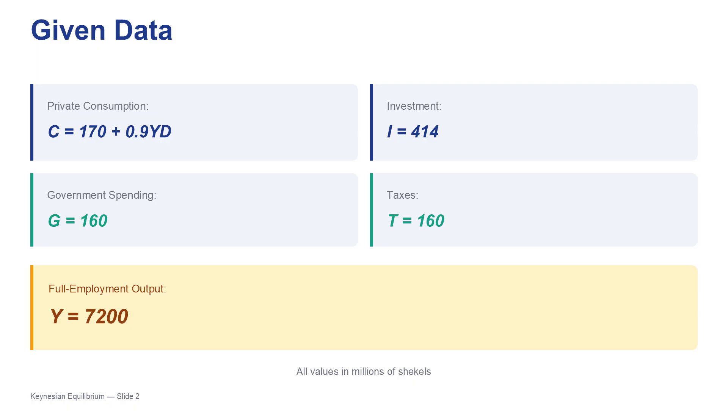Okay, let's lay out the data. The first thing you'll notice is that this economy seems to have very high consumer confidence. You see that right away in the private consumption function. It's C equals 170 plus 0.9 YD and that 0.9. That's the big one. That's the marginal propensity to consume, or MPC. It means for every new shekel of disposable income, people are spending 90% of it. That high MPC is the engine that drives the whole policy leverage we're about to uncover. It gives the government a very powerful lever to pull.